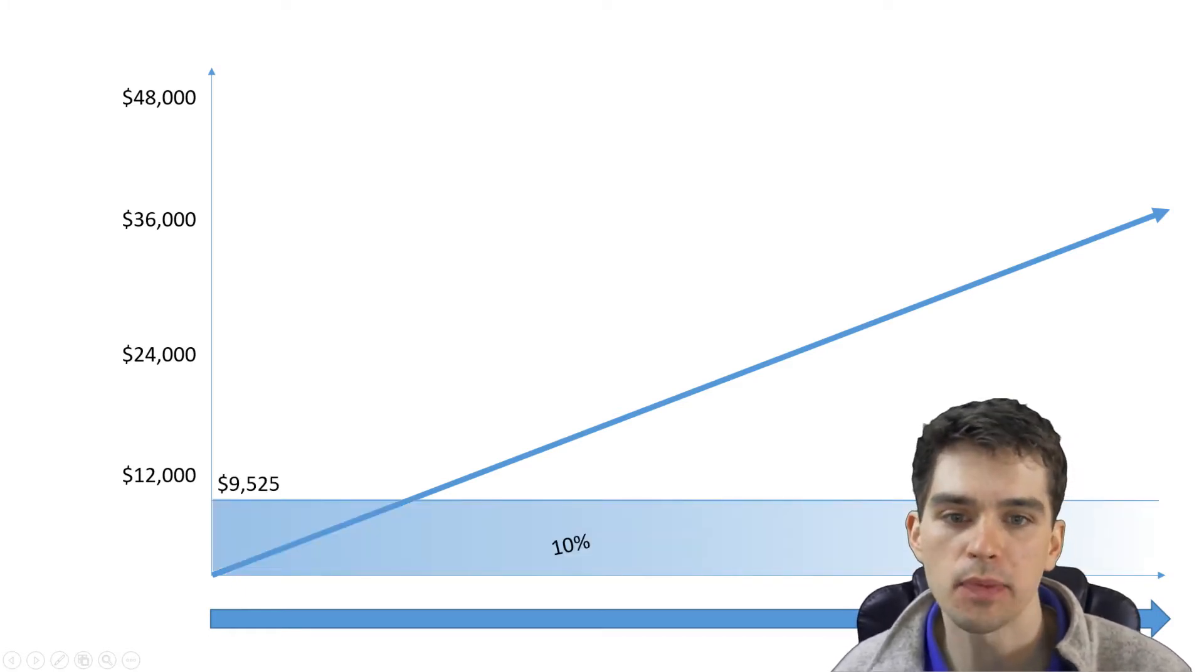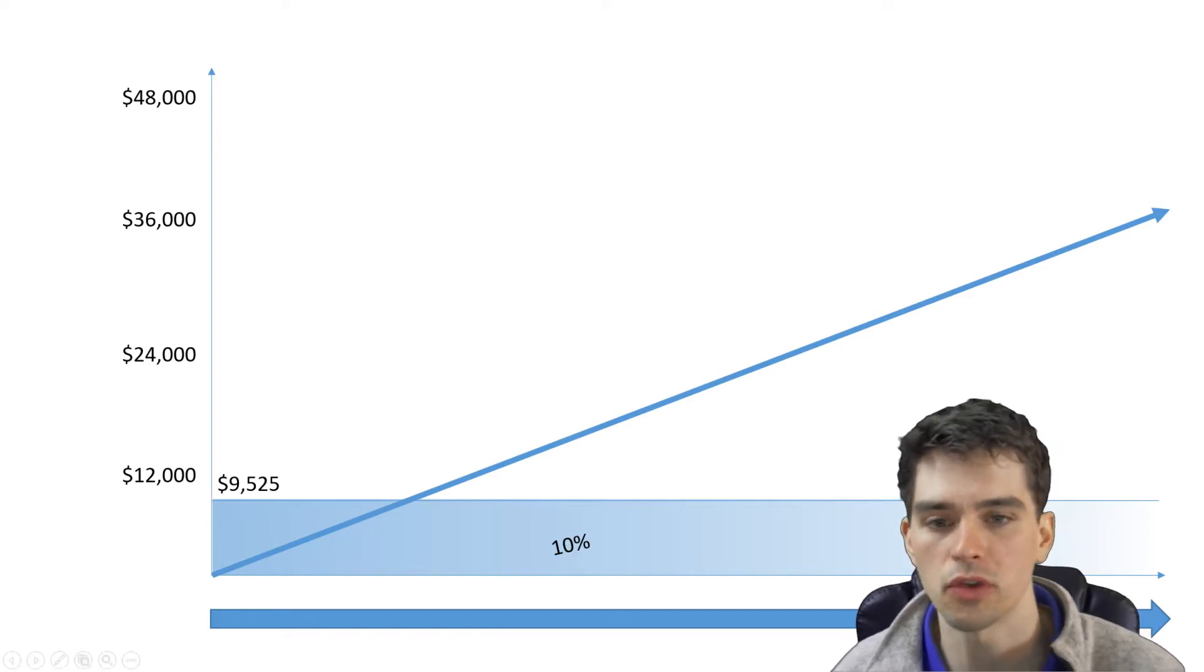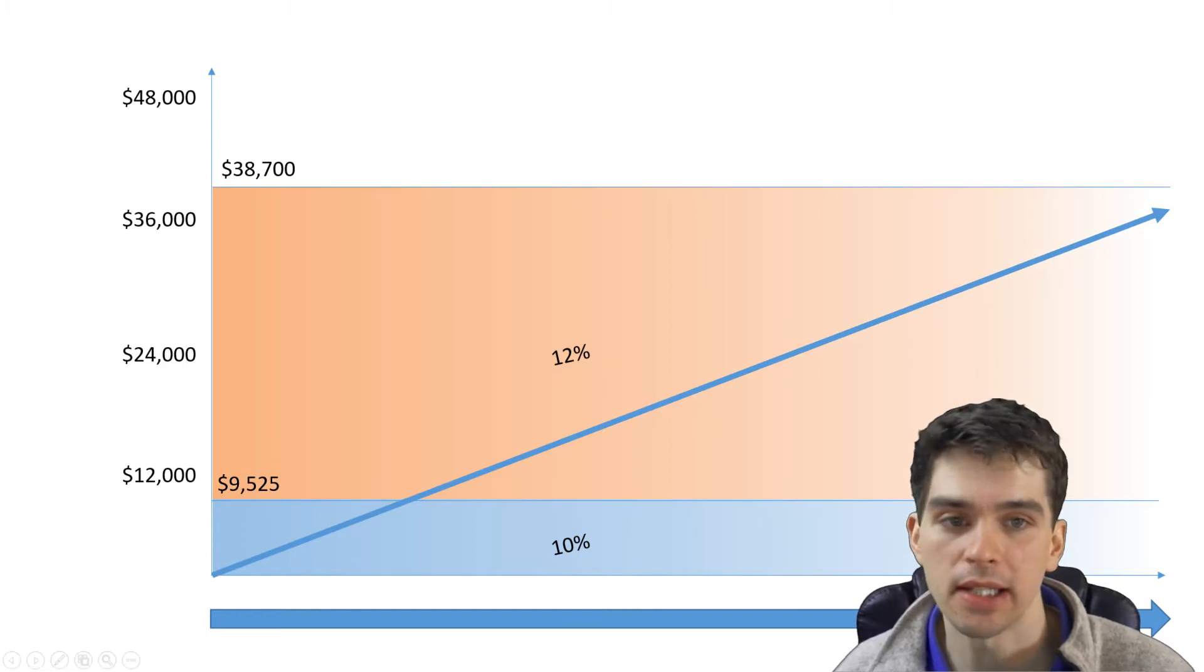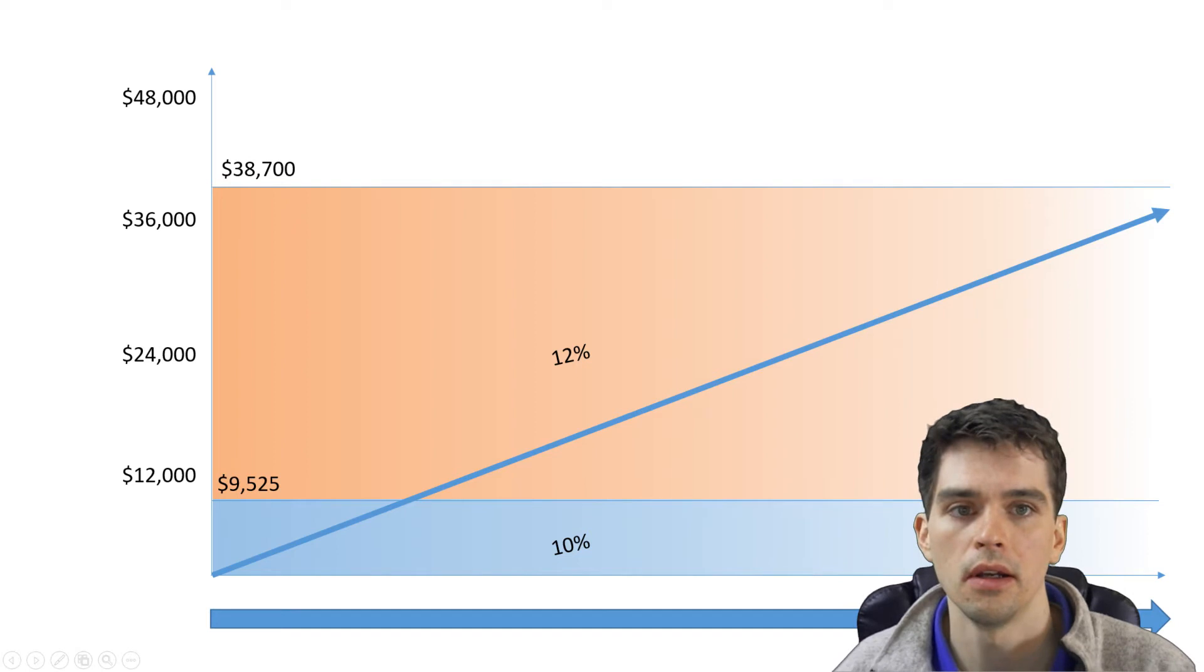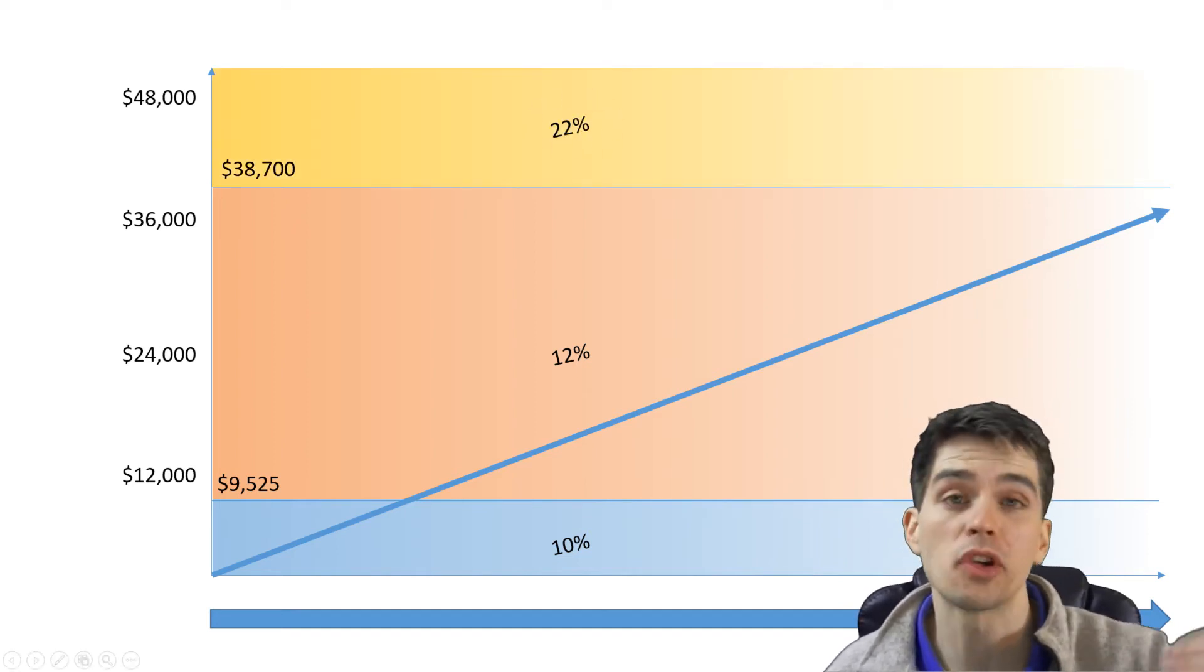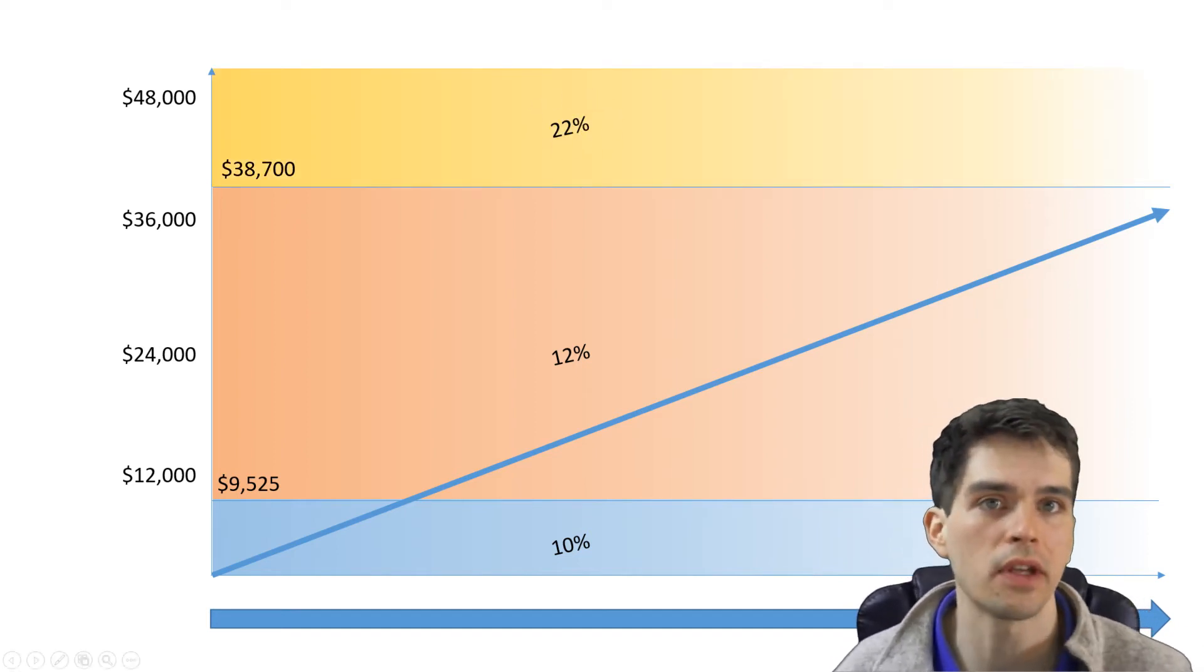So the first tax bracket is the 10% tax bracket which goes up to $9,525 a year. The next tax bracket is the 12% tax bracket which goes up to $38,700 a year. And after that, the next bracket jumps from 12% up to 22%, so this is a pretty significant jump.